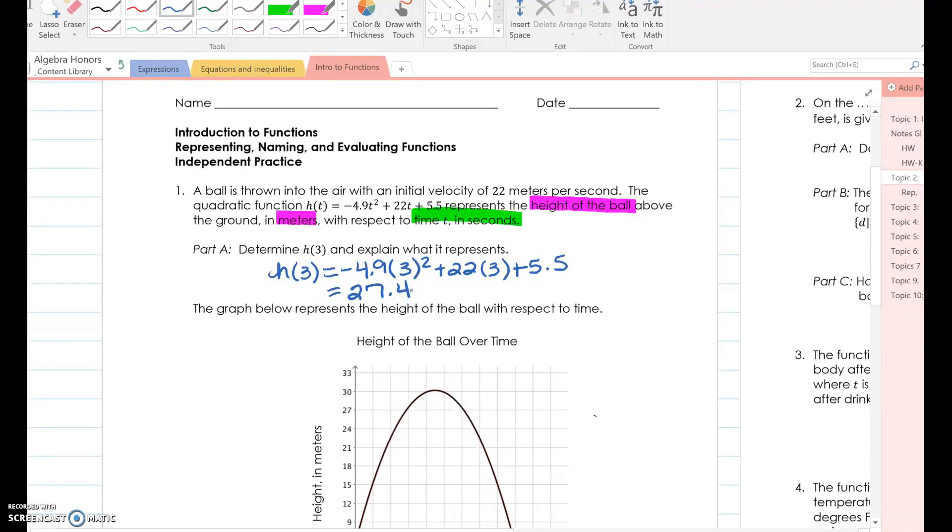So walk through, help each other out if you need to. I know we haven't really gotten to use calculators yet this year. So everybody's probably excited. So that's my function. But the biggest thing I want you to do is explain what it represents. Use the function to help you explain. So it says h of 3. Well, what does h stand for? H is the height. So the height of the ball.